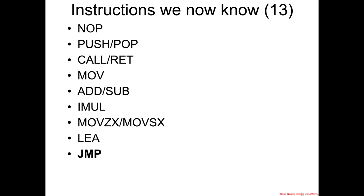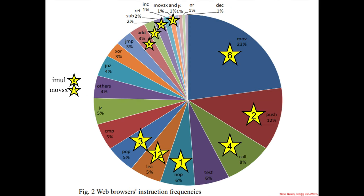So we've picked up another assembly instruction — jump. And where is it on our chart? Here it is: 3% of the slice of the pie.